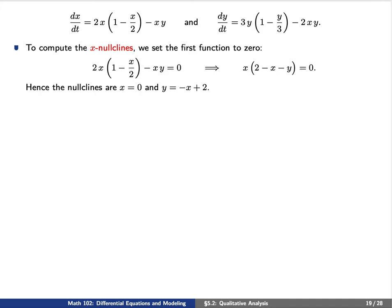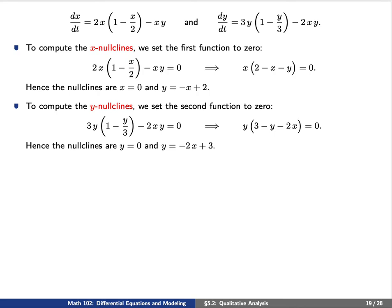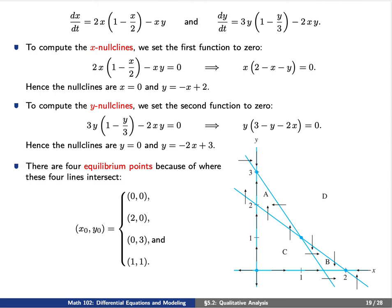Next, we compute the y-nullclines by setting g(x,y) equals 0. Upon factoring, we find two lines: the first is the horizontal line y equals 0, and the second is the line y equals negative 2x plus 3. We can plot these four lines on the graph at the lower right-hand part of your screen.